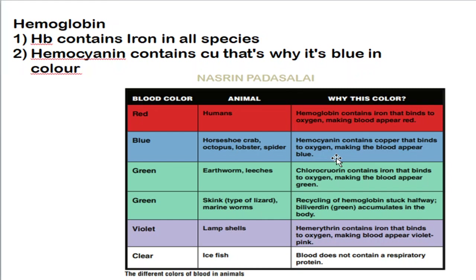They asked a few statements about hemoglobin. Not every species has hemoglobin bound to iron. In humans, hemoglobin contains iron (Fe) that binds to oxygen, which is why our blood is red. In octopus and lobster, blood is blue due to a pigment called hemocyanin, which contains copper that binds to oxygen instead of iron.